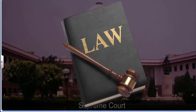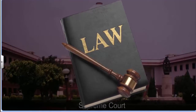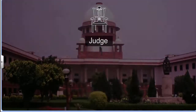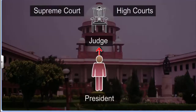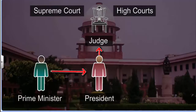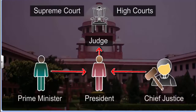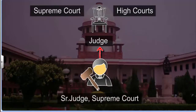The judges for the Supreme Court and High Courts are appointed by the President on the advice of the Prime Minister and in consultation with the Chief Justice of the Supreme Court. The senior judges of the Supreme Court select the new judges of the Supreme Court and the High Courts.